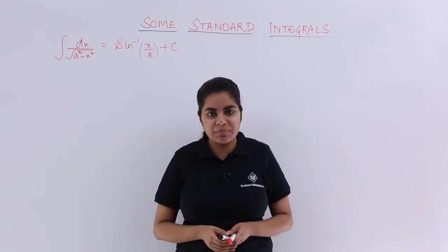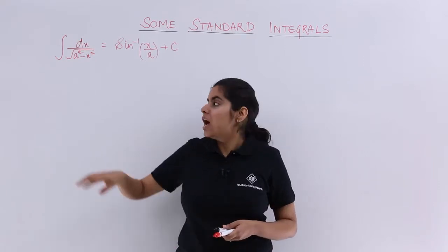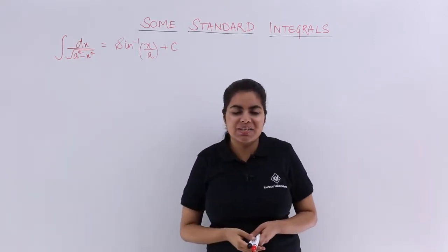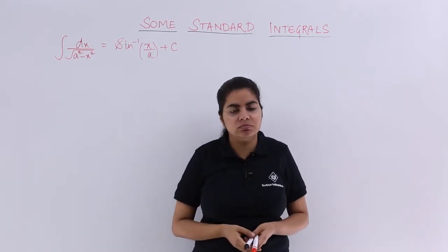Let me go with trigonometric substitution, but what to substitute in place of x? It is a square minus x square. If I substitute x as a secant theta like the previous video, does it help me?